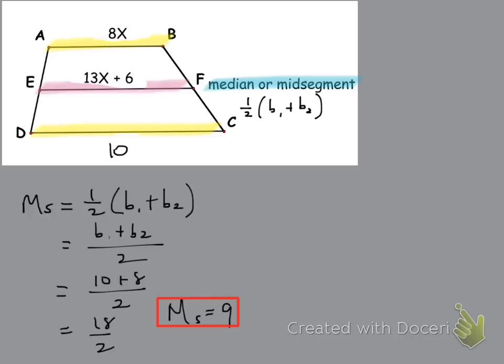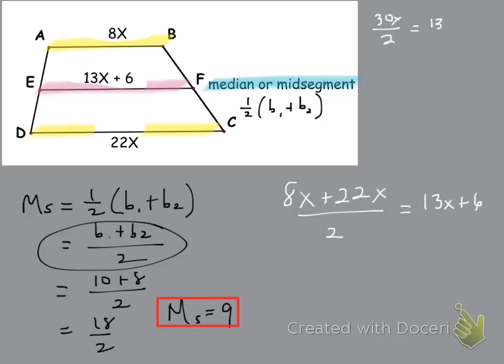So if I want to solve for x, I could set this up algebraically, and basically what I could do is, using the same formula, and again, I prefer to use this formula here, what I'm going to do is I'm going to do 8x plus 22x over 2 is equal to 13x plus 6.